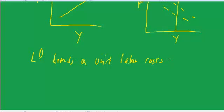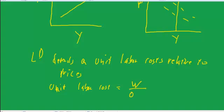So, well, unit labor costs relative to prices. Okay, the unit labor cost is the cost of producing one unit of output, which is wages divided by output per labor. And this Q over L is productivity.